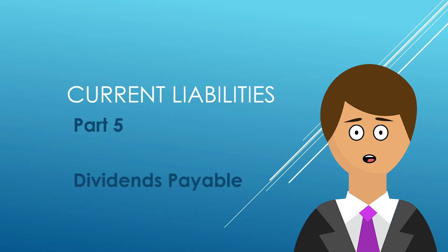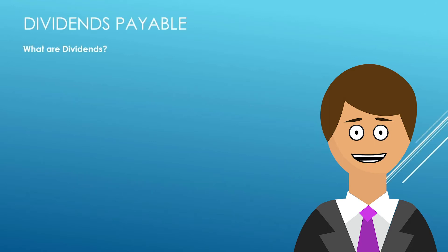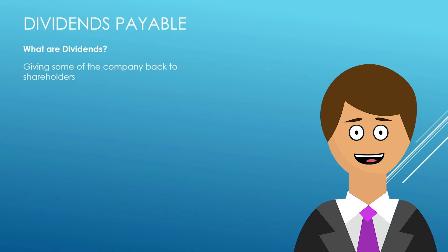In part five of our overview of current liabilities, we're going to discuss dividends payable. What are dividends? Dividends are when a company gives back some of that company to the shareholders. We're giving back some of the company back to the shareholders — we'll discuss that a little bit further here.